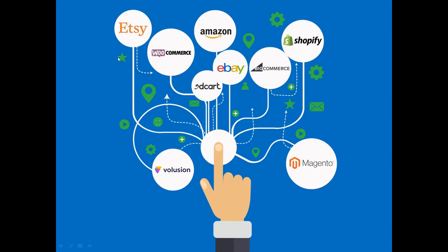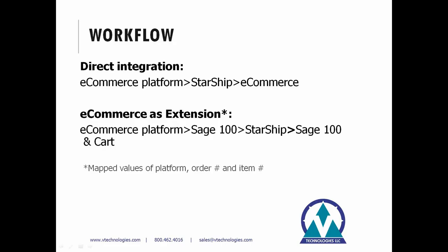Currently with StarShip and our e-commerce integration, these are the e-commerce sites we have integrations with. We have six to seven more in the works — I don't have an ETA on them — but we have SDS, Shopify, Amazon, and eBay currently available. The workflow with our integration includes two different ways you can use StarShip with your e-commerce platform: one being the direct integration where from my e-commerce platform I can pull orders directly into StarShip, do my normal StarShip ship process, receive my shipping documents, and StarShip will automatically update my e-commerce site.